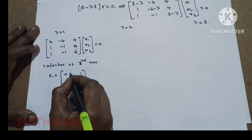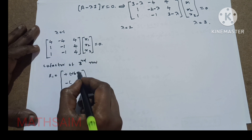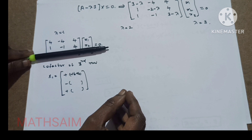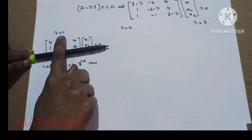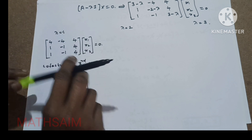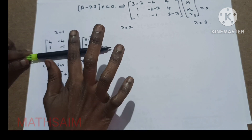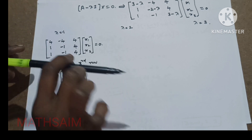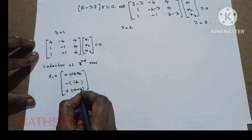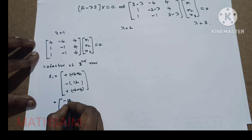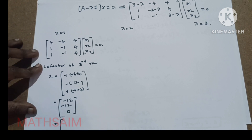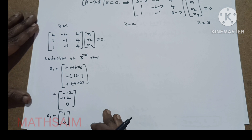Computing co-factor of the third row: first element is minus 4 times 4 equals minus 16, minus plus 4 equals plus 4. Second element: 4 times 4 is 16, 16 minus 4 is 12. Third element: minus 4 plus 4 equals 0. So the co-factors are minus 12, 12, and 0. Dividing by minus 12 gives 1, minus 1, 0. Wait — the values are minus 12 and minus 12, so dividing by minus 12 gives 1, 1. This is our first eigenvector.